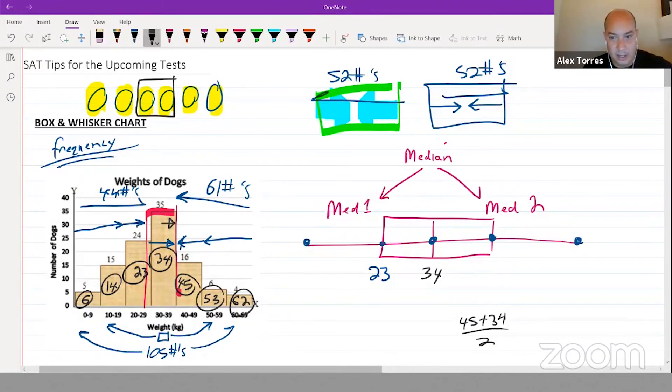And so all we need now for our box and whisker chart is the lowest number, which is 6, the highest number, which is 62. And we just showed you how to create a box and whisker chart in a really complicated situation. The only thing left to know is the distance from here to here is the interquartile range. The interquartile range is the distance from 39.5 to 23, which is 16.5.